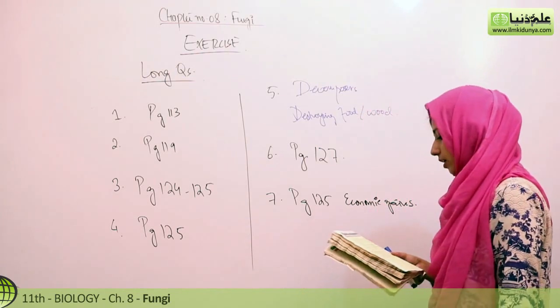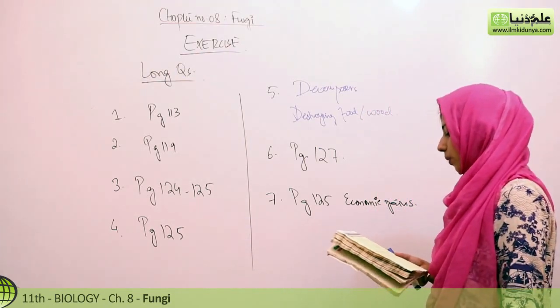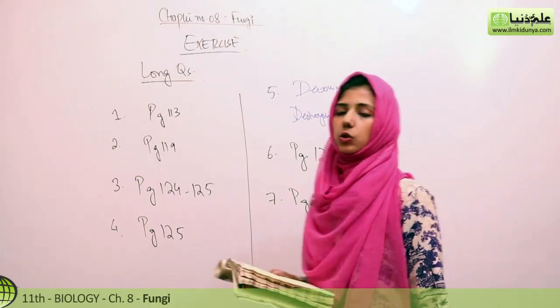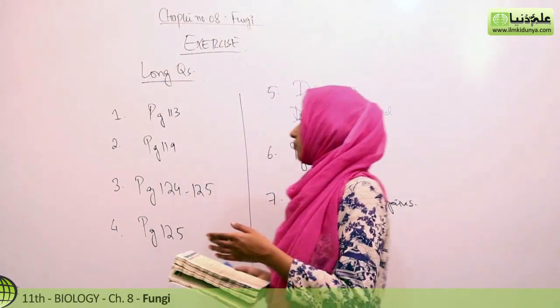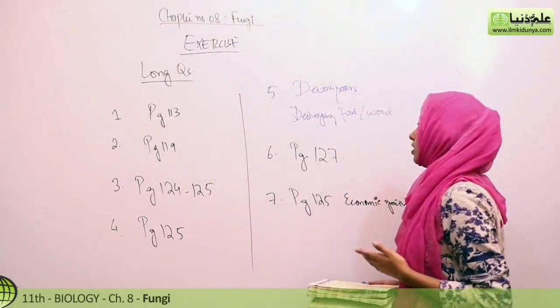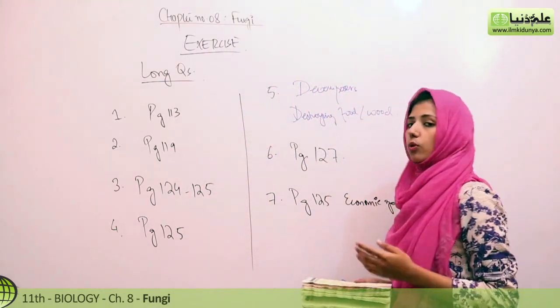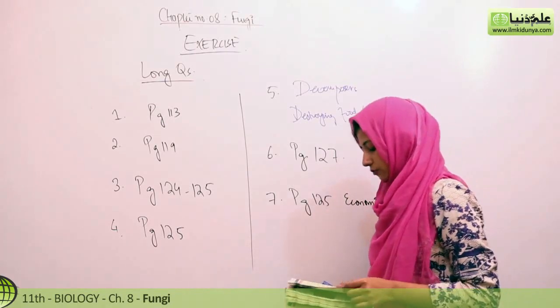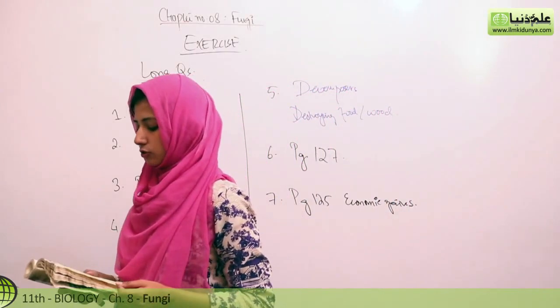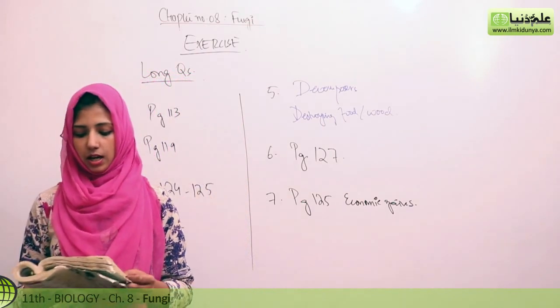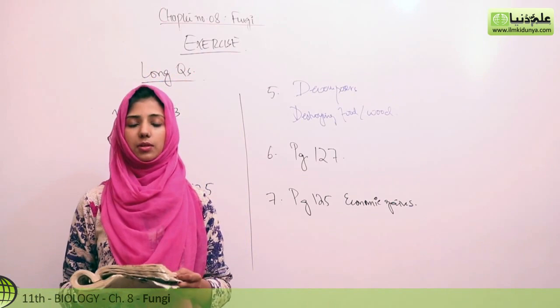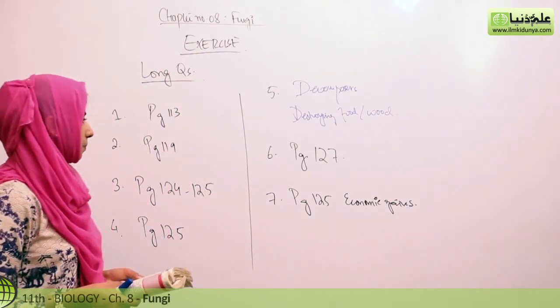Fifth question is about same enzymes of fungi useful on one hand and harmful on the other. Discuss. Same enzymes jo hai useful is because they are performing the process of decomposition, decomposers ke tor pe. Wohi jo enzymes hain, they are also destroying food and wood, etc., so woh mein hi harmful ho jate hain. Sixth hai, name four important fungal diseases of plants or four fungal diseases of humans and briefly describe any one of the plant disease and any one of the disease of humans. These diseases jo hai, it's given on page 127, animal disease and plant disease under.